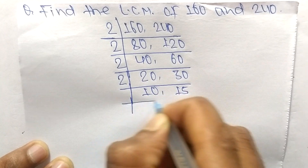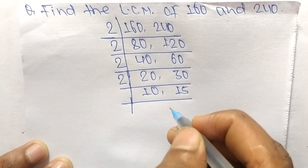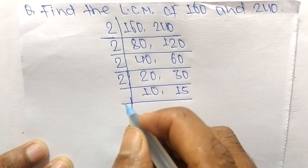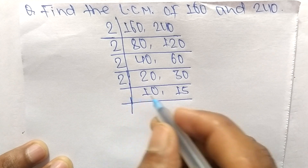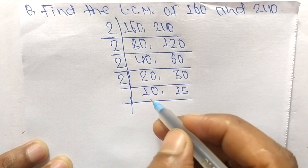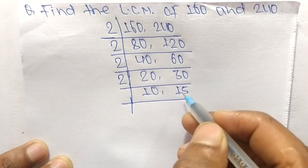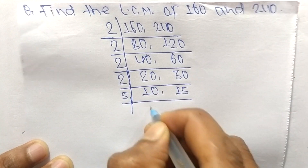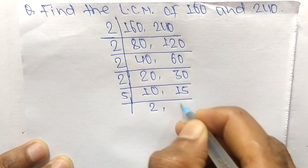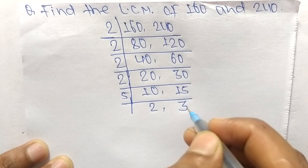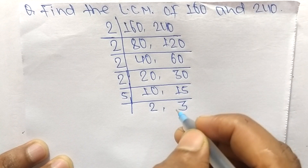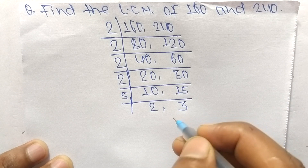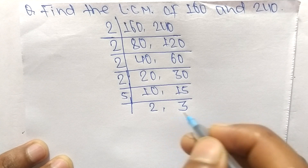Now 10 and 15 are not exactly divisible by 2, so we choose the next number greater than 2 that can exactly divide both 10 and 15, which is 5. So 5 times 2 equals 10, and 5 times 3 equals 15. At last we have 2 and 3, which are not exactly divisible by the same number.